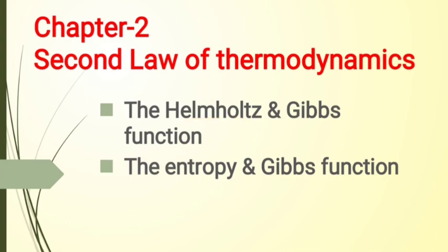Consider a system with its temperature and volume held constant. The system is not isolated because it must be in thermal contact with a thermal reservoir to maintain a constant temperature. Hence the criterion delta S greater than zero — where delta S equals delta S of system plus delta S of surroundings — does not directly apply to the system at constant volume and temperature.